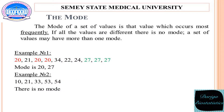The third measure is the mode. The mode of a set of values is that value which occurs most frequently. If all the values are different, there is no mode. A set of values may have more than one mode. In the first example the mode is 20 and 27, and in the second example there is no mode.